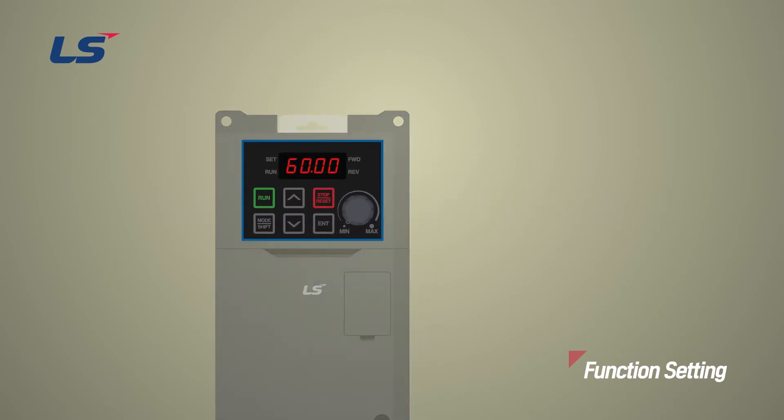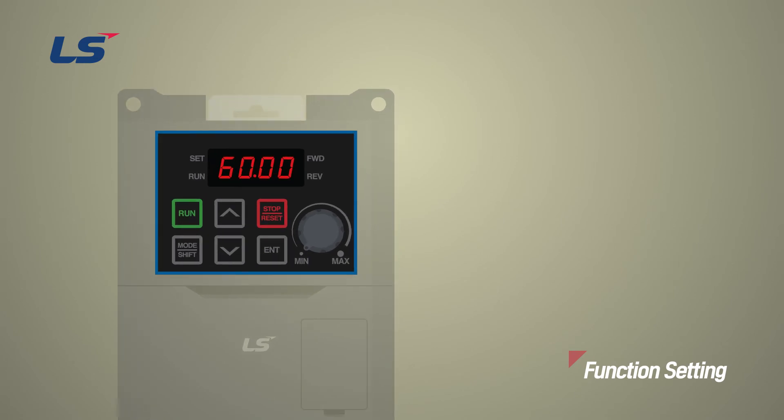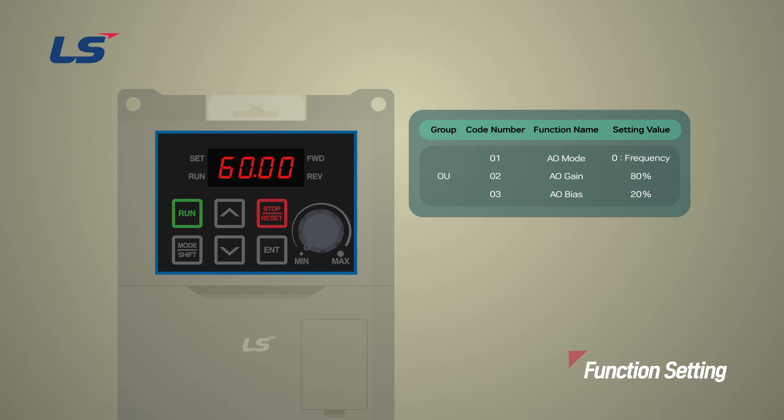Next, we will learn how to use the keypad to monitor the frequency through the output of 2 to 10 volts. In this video, we will set the output to 2 volts at 0 hertz and 10 volts at 60 hertz.